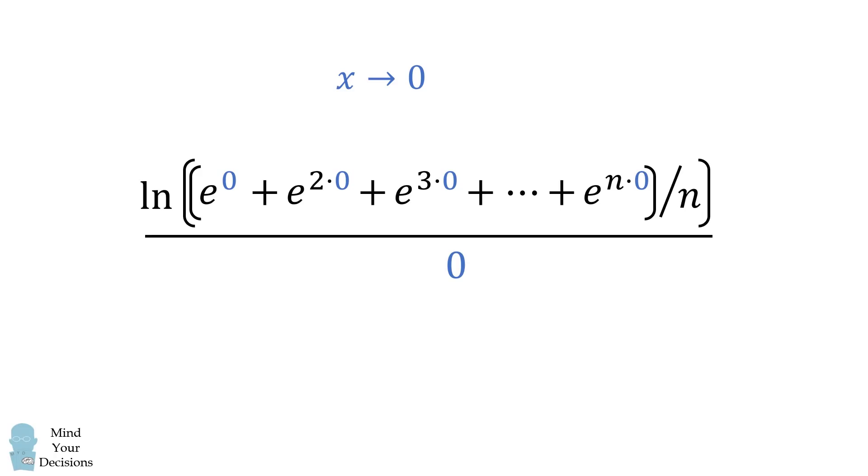The denominator becomes 0. We will now simplify the numerator. n multiplied by 0 is equal to 0. Then, e to the power of 0 is equal to 1. There are exactly n terms, so this sum is equal to n. We then have n divided by n, which is equal to 1. The natural log of 1 is then equal to 0.